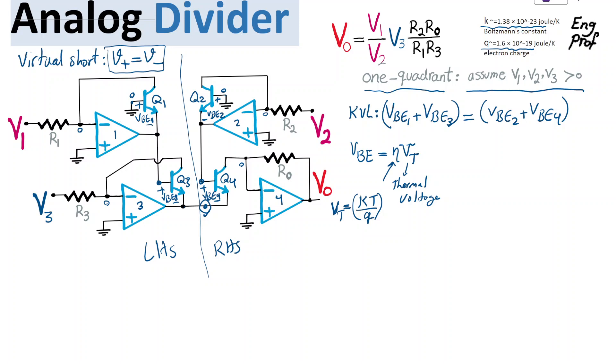So VBE is eta VT, and then we have ln, natural logarithm of the current that passed through the transistor, so the current of transistor, and then divide by saturation current of transistor.